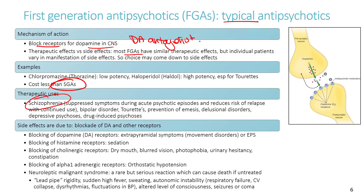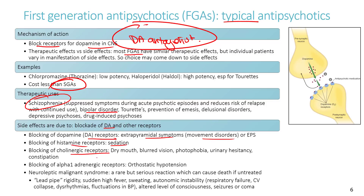Therapeutic uses include schizophrenia and acute episodes of mania in bipolar disorder. However, blocking dopamine receptors can also cause extrapyramidal symptoms (EPS), sedation from histamine receptor blockade, anti-muscarinic effects from cholinergic receptor blockade, and orthostatic hypotension from adrenergic receptor blockade.